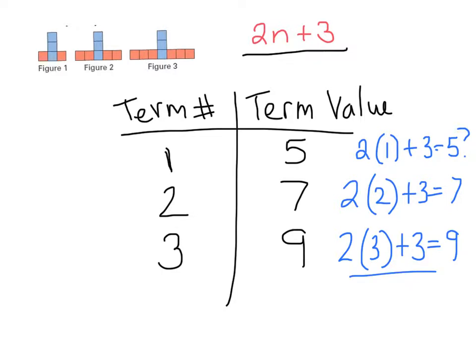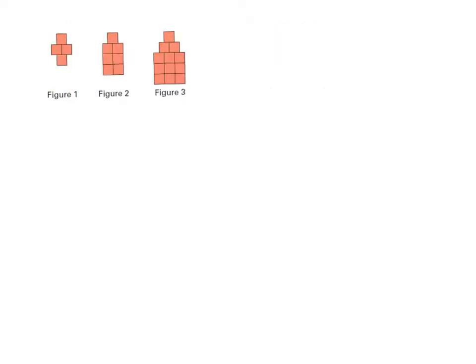Now sometimes we're going to run into patterns that aren't quite so simple to figure out. The shapes, for example, aren't going to be color-coded and maybe they're not going to show us the same sort of simple growth as the last one did. In those cases, my strategy is always to start right at the t-chart and work from there.